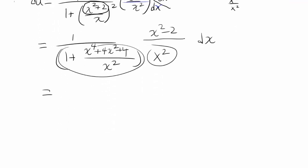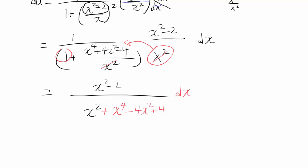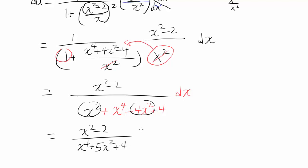Multiplying through by x squared and distributing: we have x squared minus 2 on top, and x squared multiplying gives us x to the 4th plus 4x squared plus 4 — the x squareds cancel out. So you have x squared minus 2 over x to the 4th plus 5x squared plus 4, dx. And we can simplify this even more.